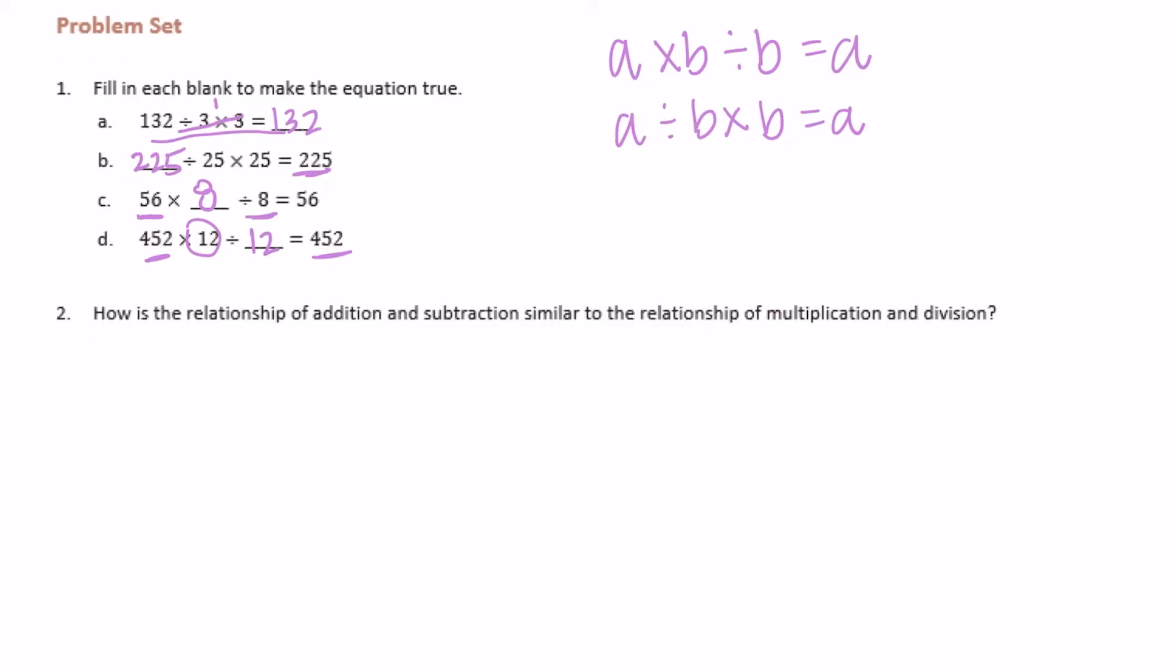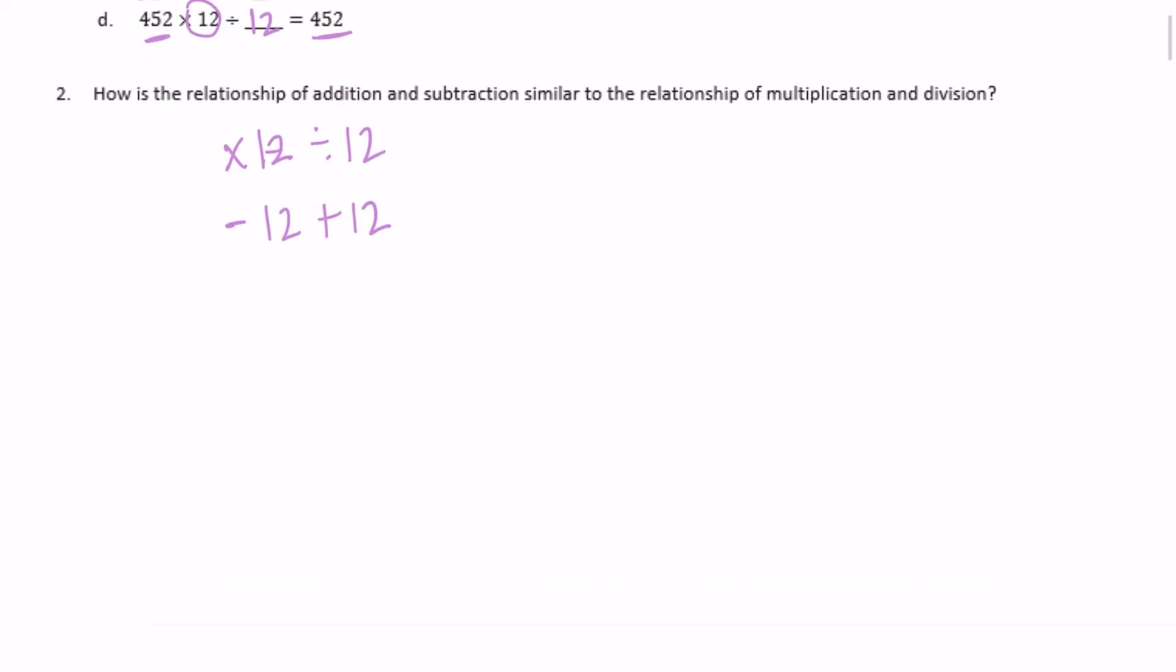Number two: how is the relationship of addition and subtraction similar to the relationship of multiplication and division? What we've shown here is that if you multiply by 12 and then divide by 12, it gets us the same thing. We end up with one, which is going to create an identity.